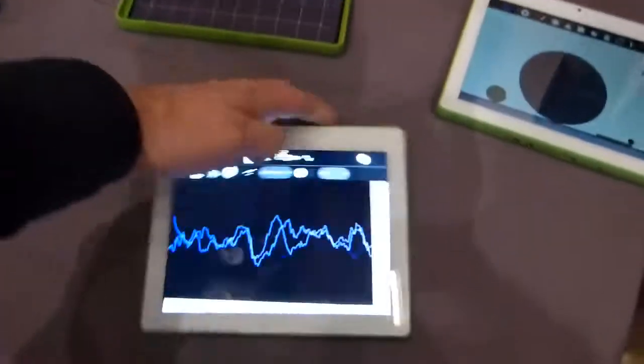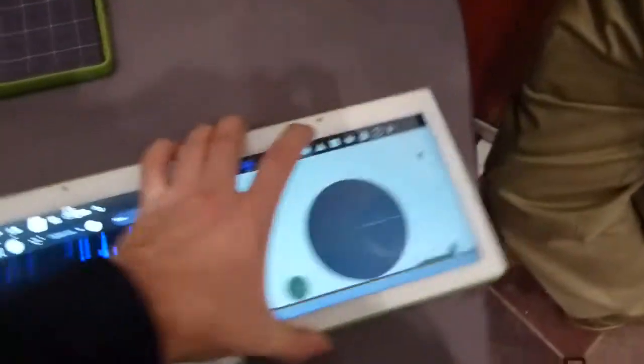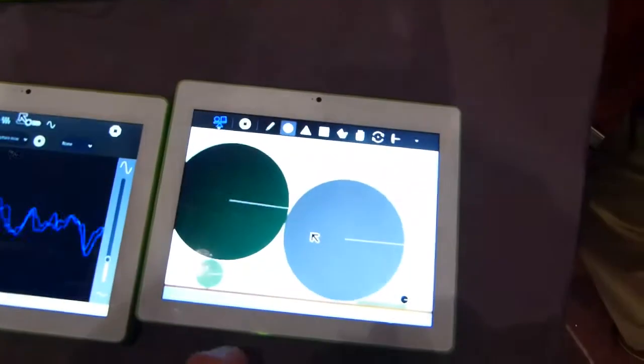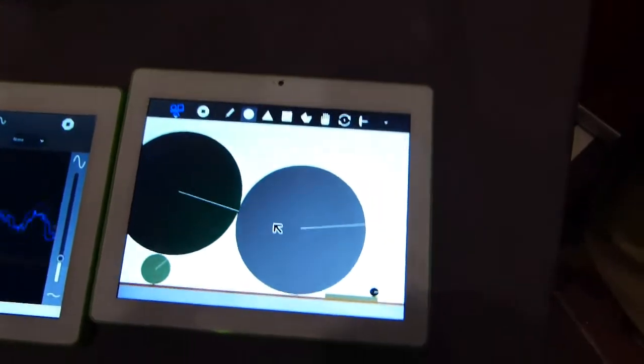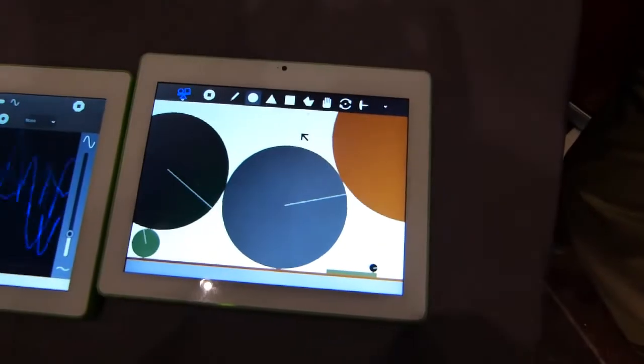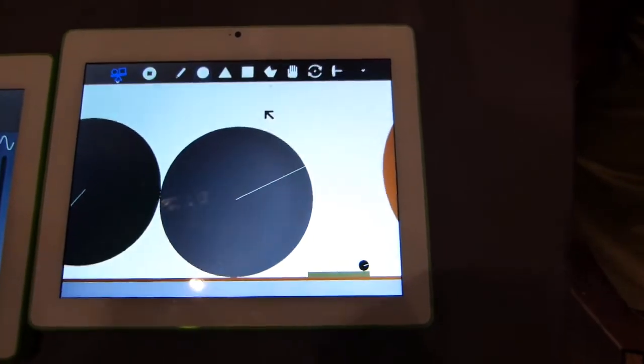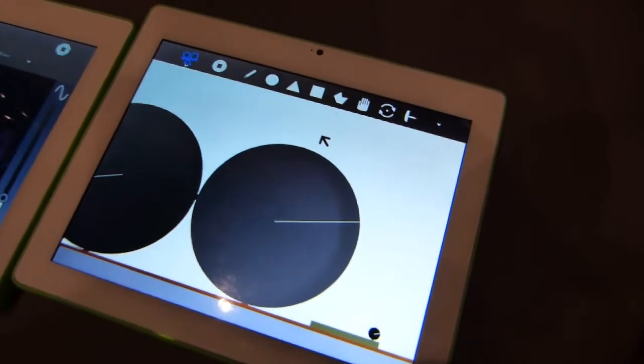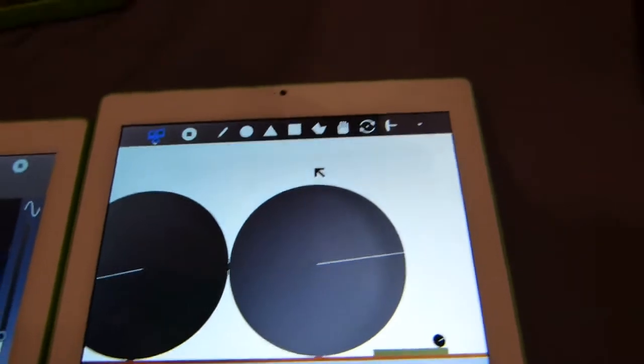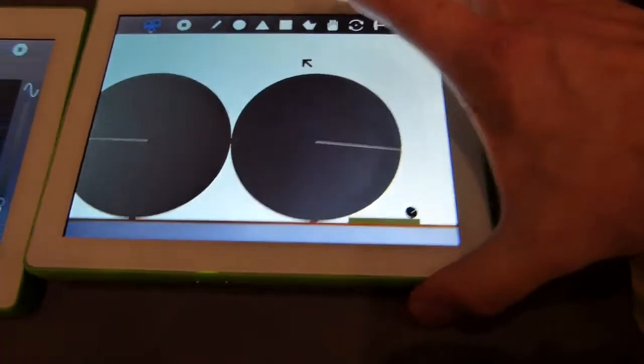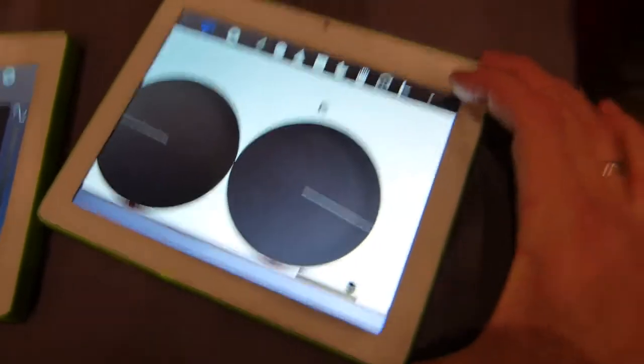There's two versions of the screen on this. This is probably easier to demonstrate on this one. This is the standard LCD backlit touch screen, but there will be a version that will have the Pixel Qi screen on it, the dual mode trans-flective screen or their technology similar to that.